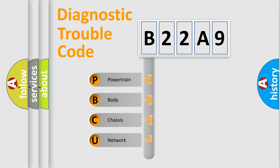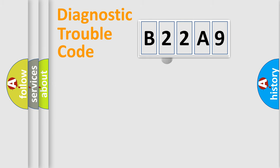We divide the electric system of automobile into four basic units: Powertrain, Body, Chassis, and Network. This distribution is defined in the first character code.